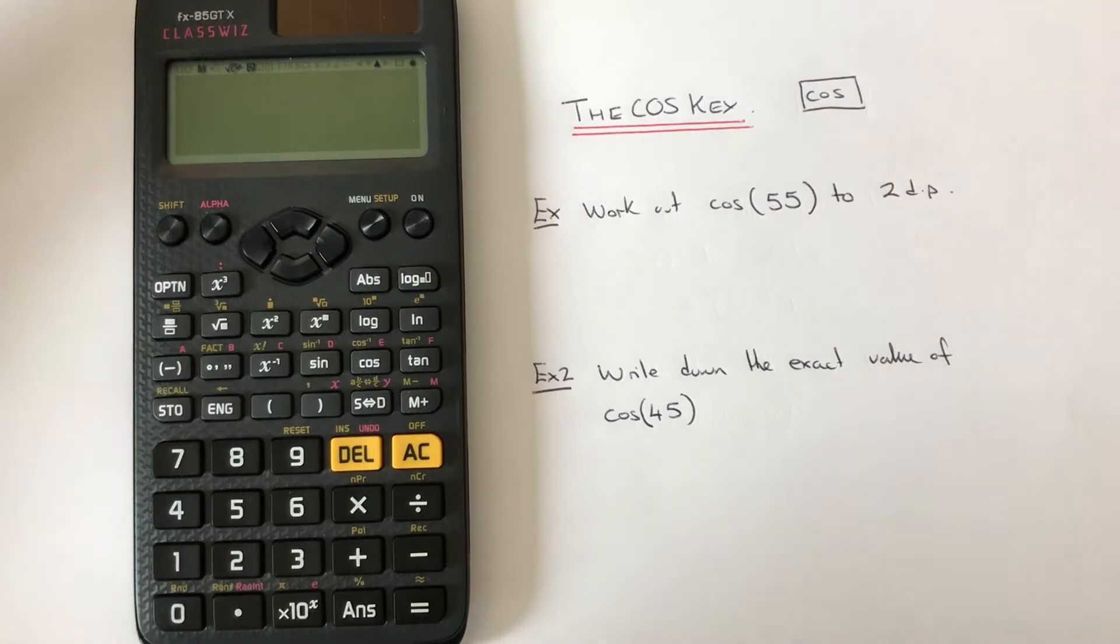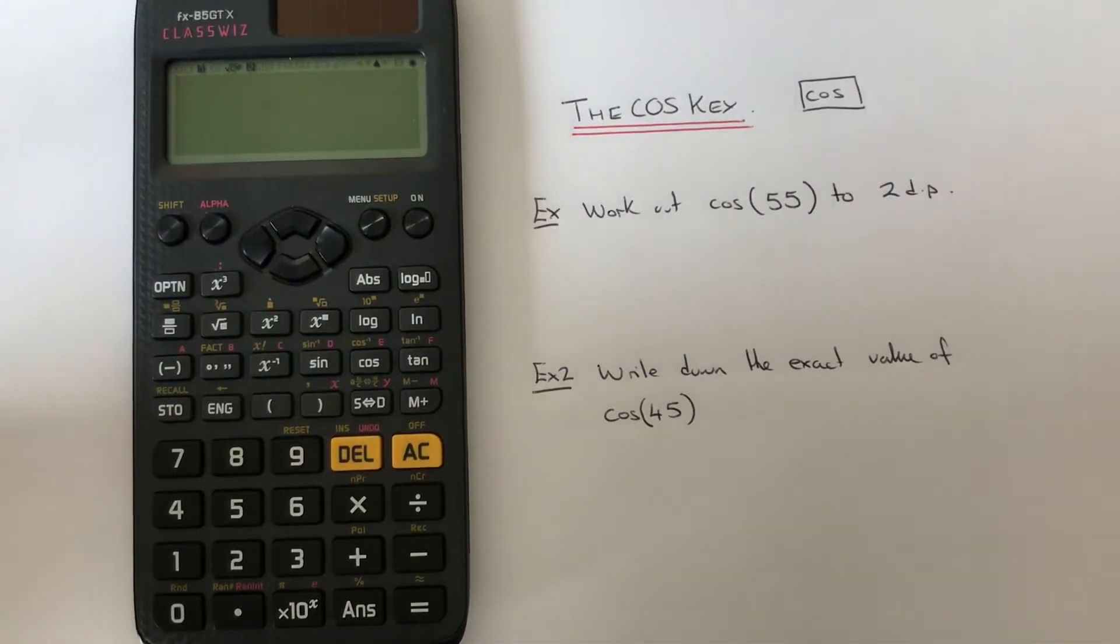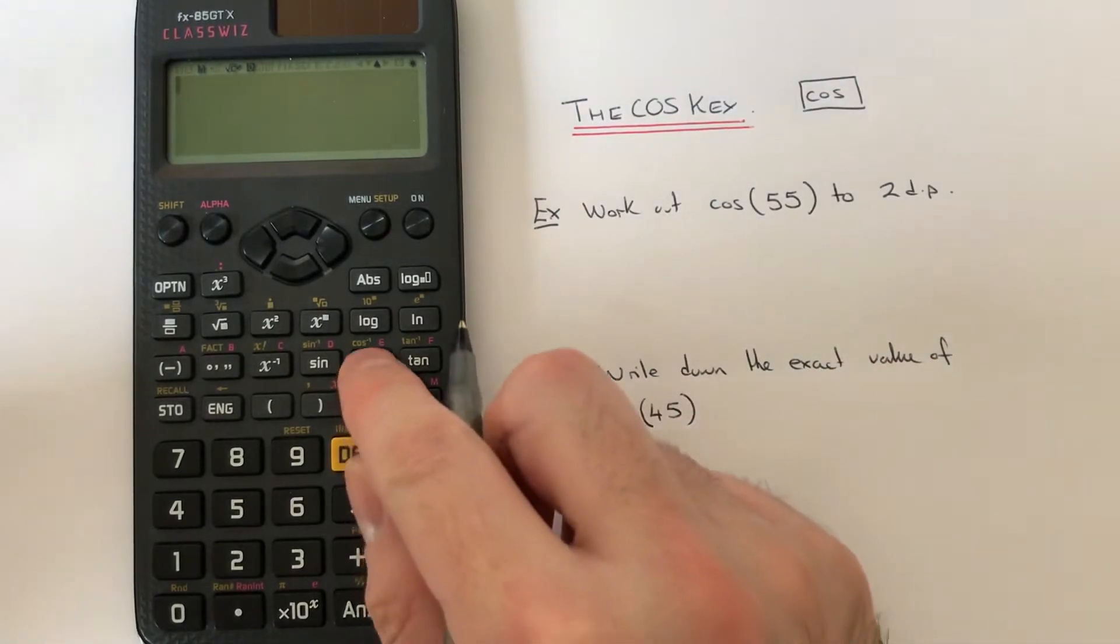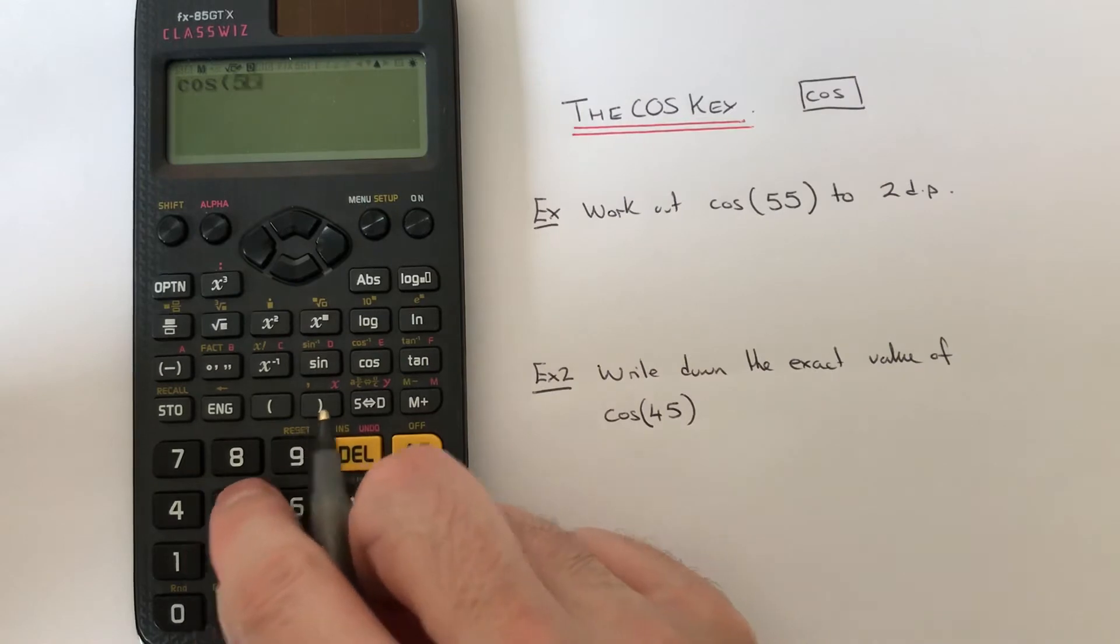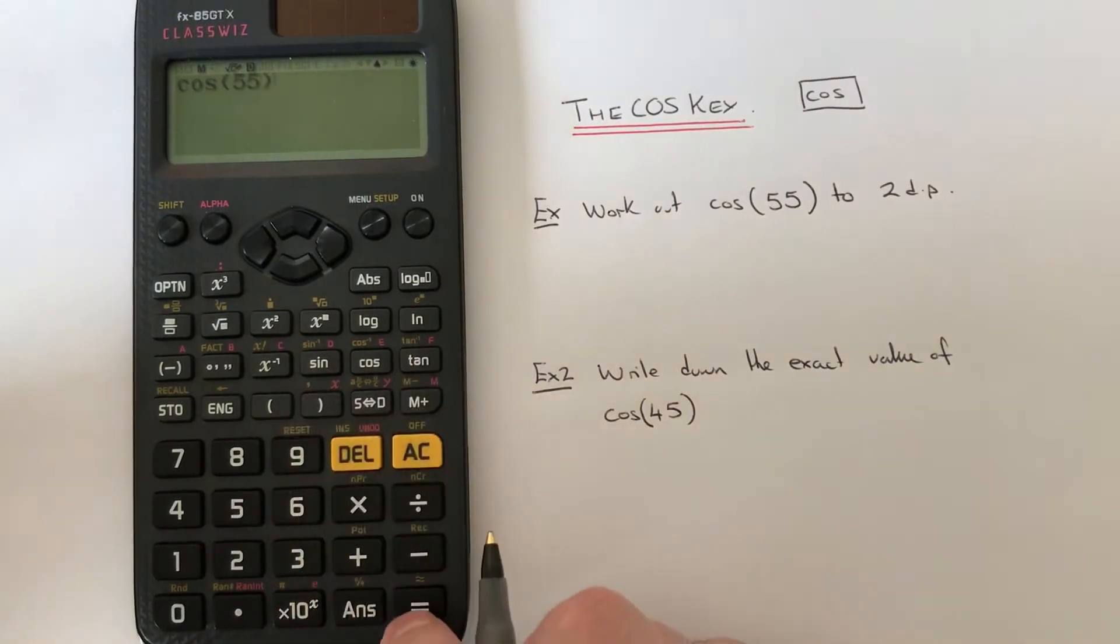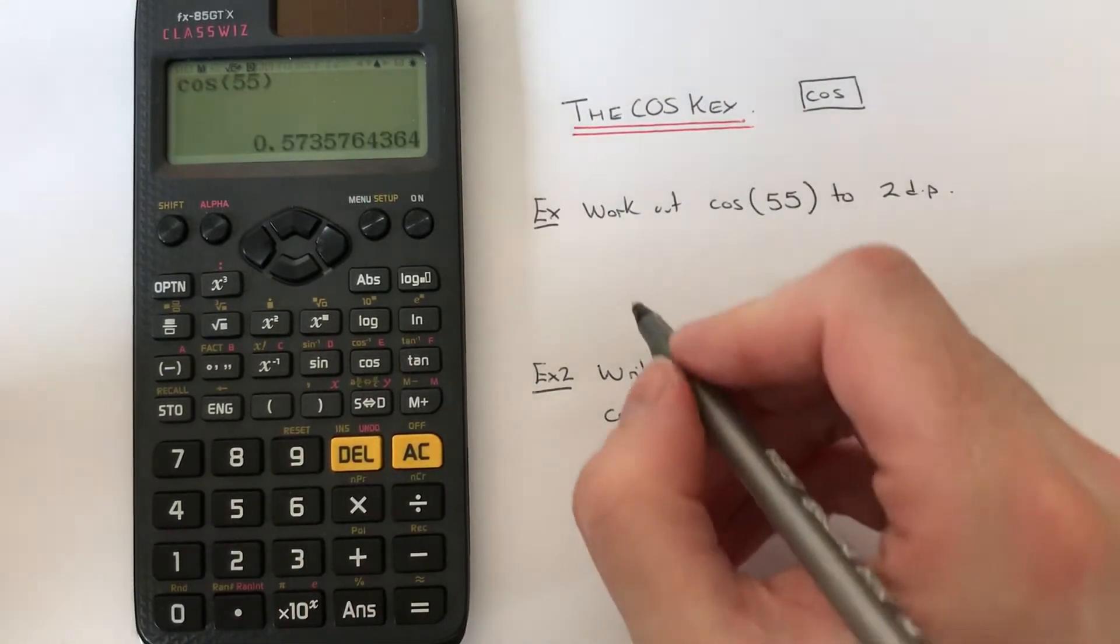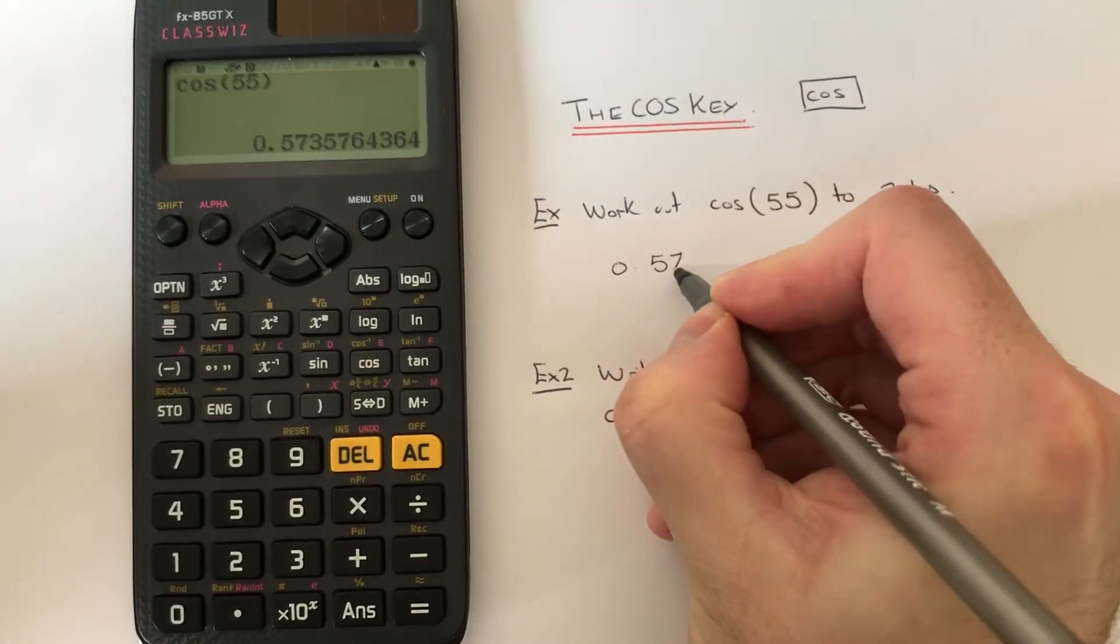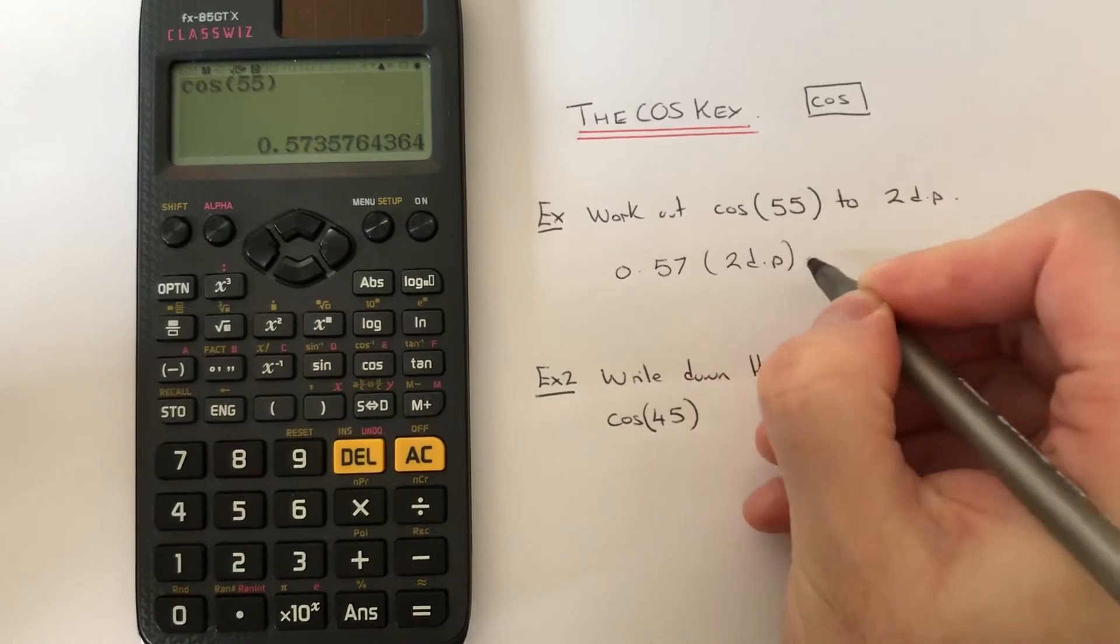I've got to work out the answer to cos 55 to two decimal places. So if we press cos 55, close your bracket, and we get an answer of 0.57 to two decimal places.